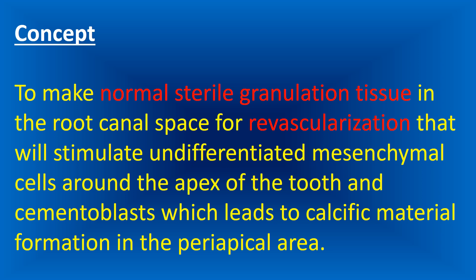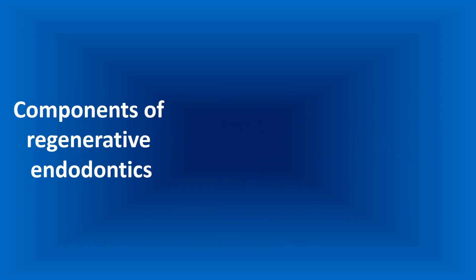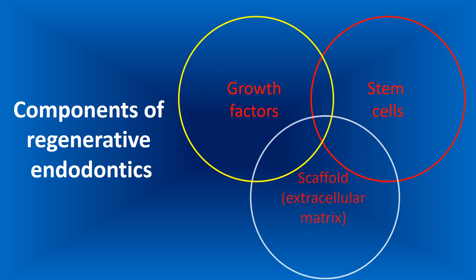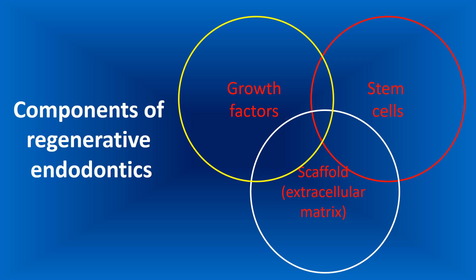The concept of this topic is to create normal sterile granulation tissue in the root canal space for revascularization, which will stimulate undifferentiated mesenchymal cells around the apex of the tooth and cementoblasts, leading to calcific material formation in the periapical area. The three components of regenerative endodontics are stem cells, growth factors, and scaffold — which is the extracellular matrix that keeps the stem cells together.